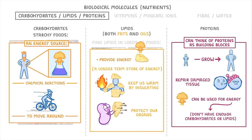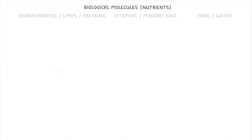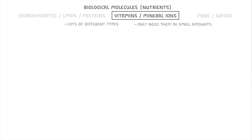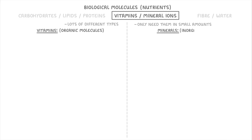Next we have vitamins and mineral ions, which are both similar in that there are lots of different types of each and we only need them in very small amounts. The key difference though is that vitamins are organic molecules, meaning that they're made by living organisms, whereas minerals are inorganic and generally much simpler molecules.